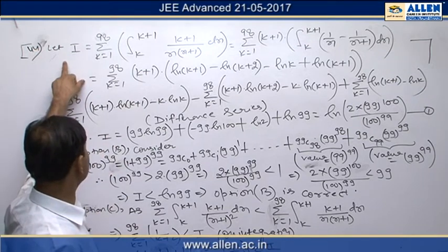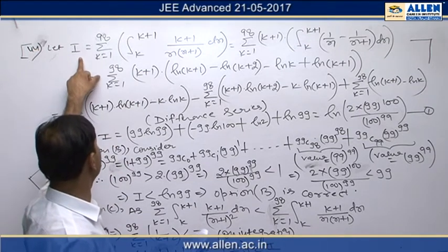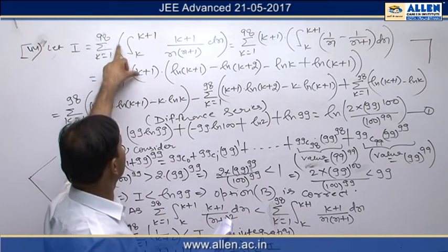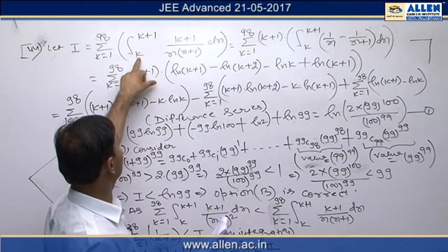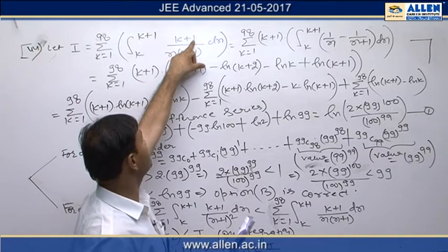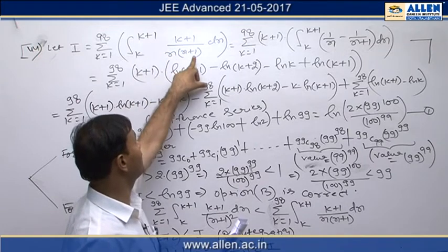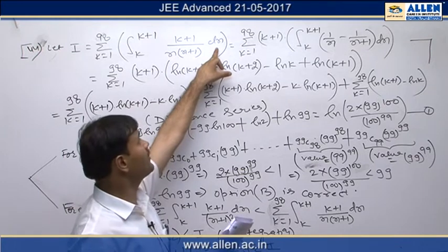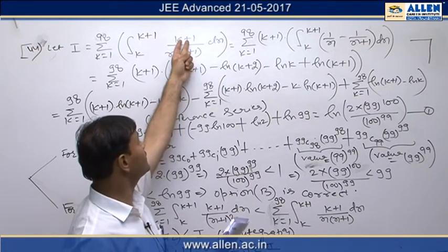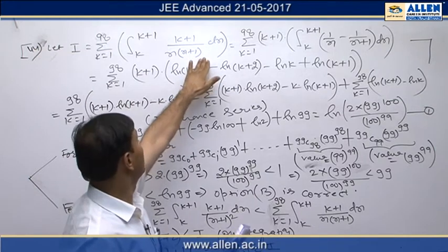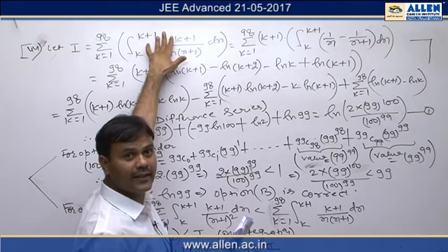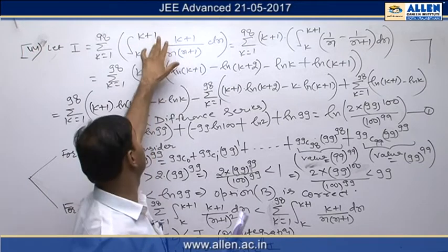In question number 44, we are given an integral. We have summation k varying from 1 to 98 and integration over the interval k to k+1. The function to integrate is (k+1) divided by x multiplied by (x+1), with respect to x. Since we are integrating with respect to x and k is constant, we first integrate and find the value of this definite integral as a function of k.